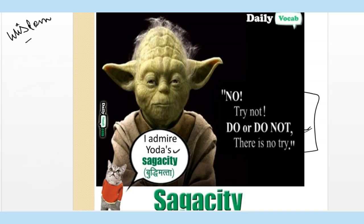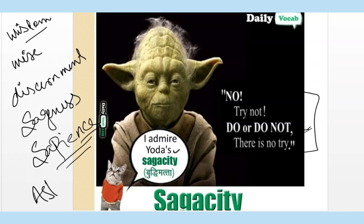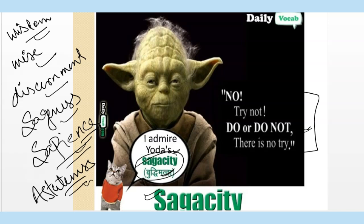Any person who has sagacity we can call that person 'sagacious' — a wise person. Synonyms of sagacity: 'discernment', 'sageness', 'sapience' (check the spelling: S-A-P-I-E-N-C-E), and 'astuteness'. So sagacity means buddhimatta — wisdom. Astuteness, sapience, sageness, and discernment are all synonyms. A sagacious person is one who is very wise. That was the last word from today's list — I hope you are enjoying the vocabulary session. Thank you so much.